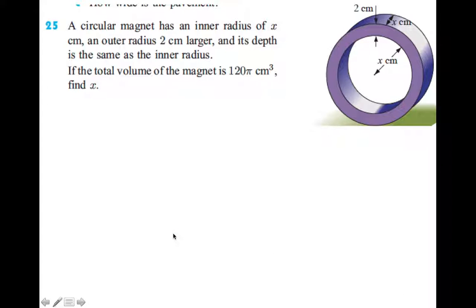We're going to use that formula. So back to the problem. First of all, to find the volume of the magnet, the volume of the magnet is the entire thing minus the hole.